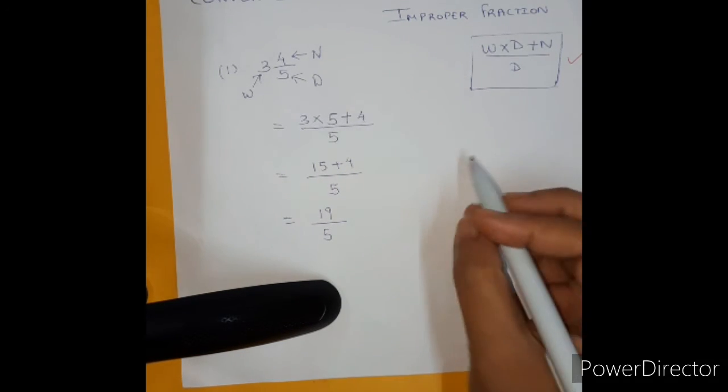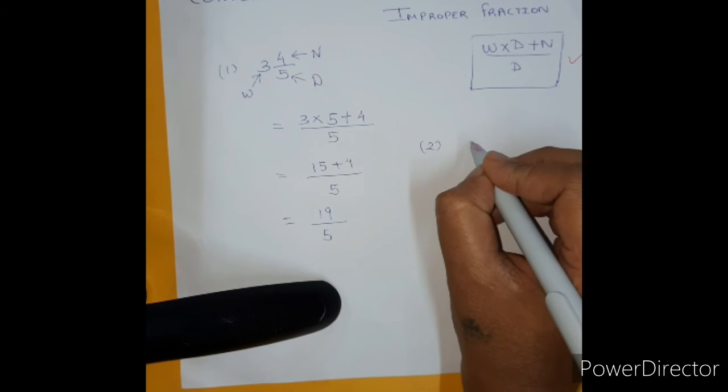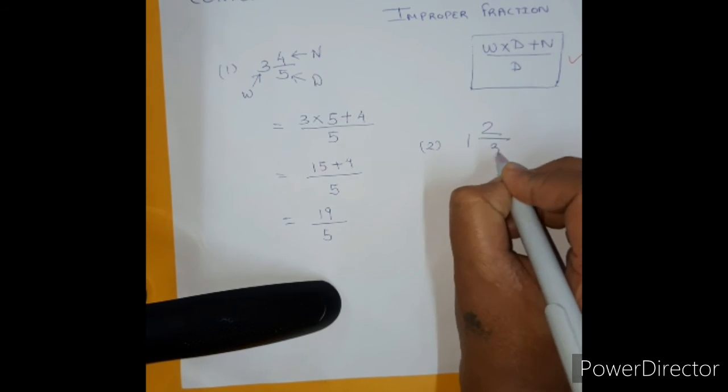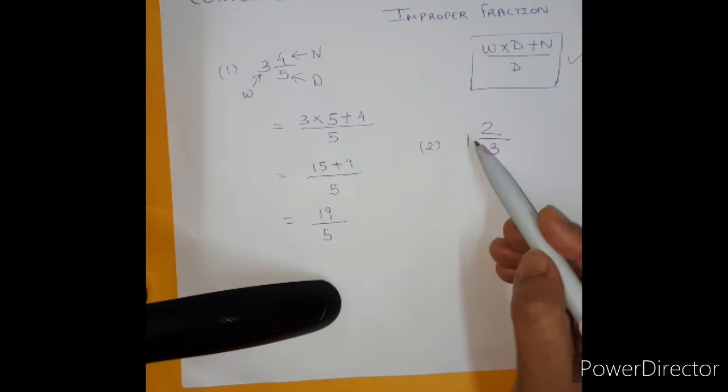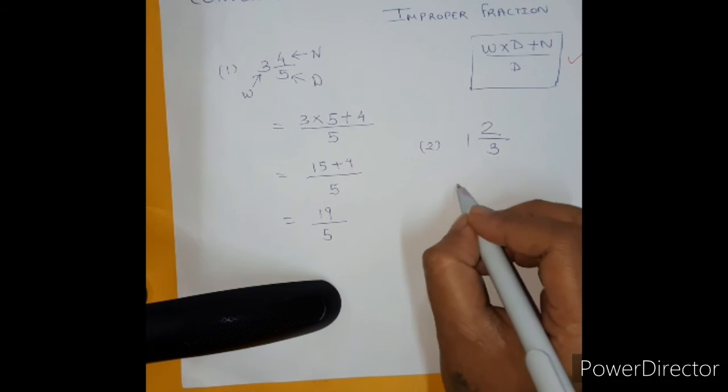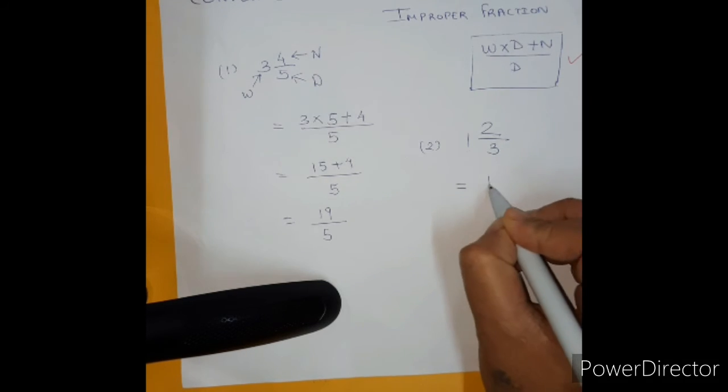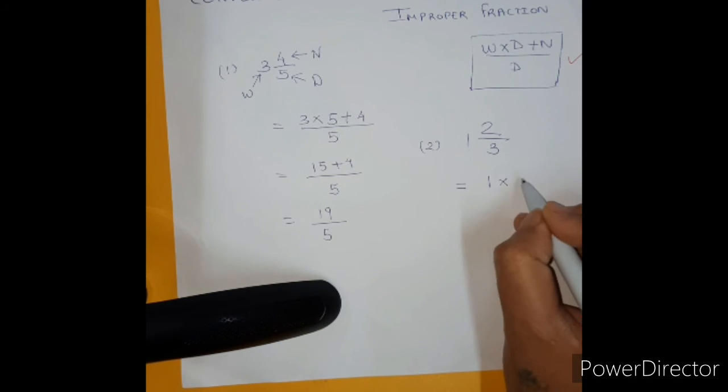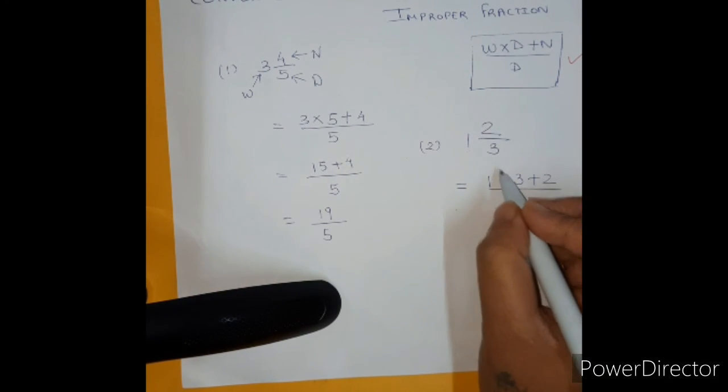Shall we take another example? Okay. We have 1 as a whole number 2 upon 3 where 2 is a numerator and 3 is a denominator. 1 is a whole number. So we will put the formula. What is whole number? 1 multiplied by the denominator that is 3 plus the numerator that is 2 upon denominator.